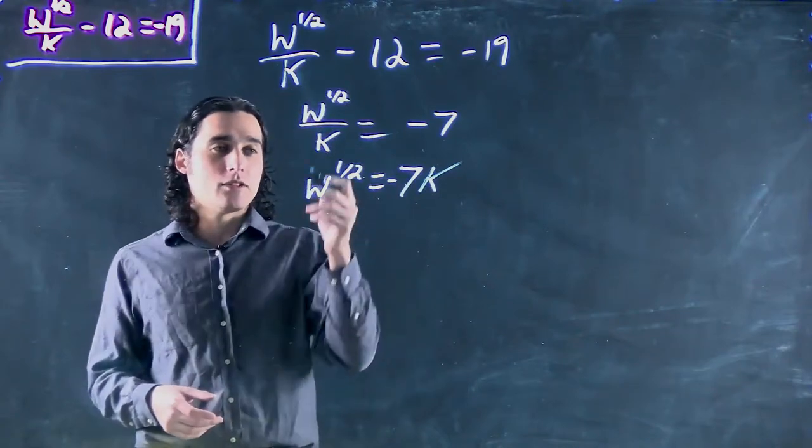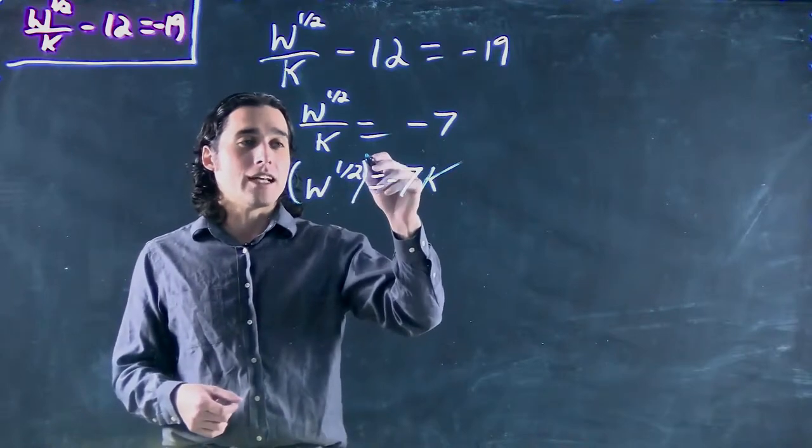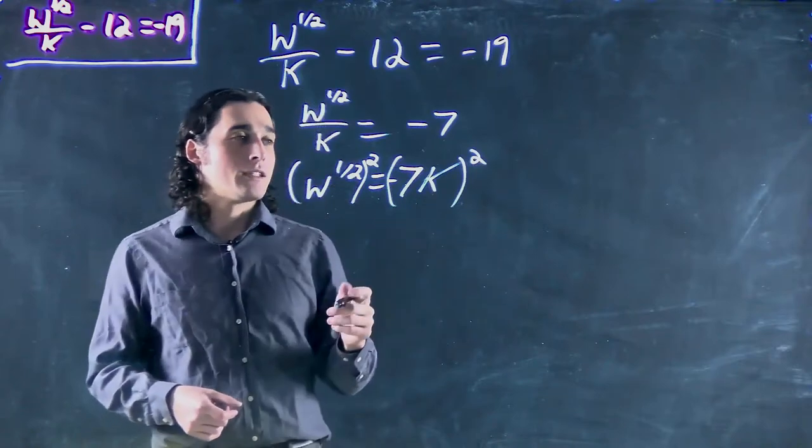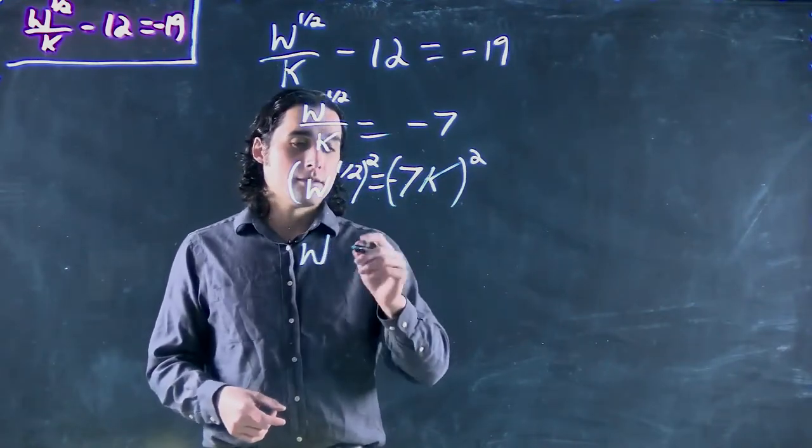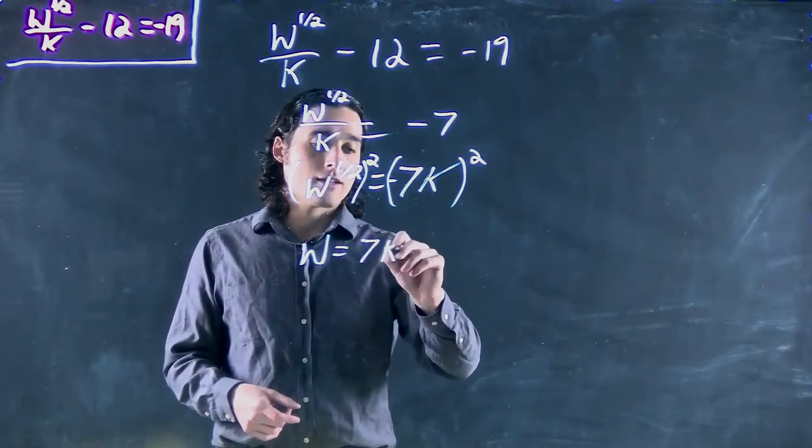And now if we want to get rid of that one-half, we have to put both sides to the inverse power or square both sides. So in this case, we had w equals 7k squared.